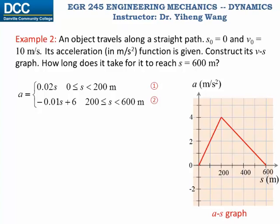Now let's look at an example that is not so straightforward. We are given acceleration as a piecewise function of position — not a function of time. We are also told that the initial position is zero and the initial velocity is 10 meters per second. We need to construct the v-s graph, velocity as a function of position, and also find at what time the position reaches 600 meters. For this we need to use the equation a·ds equals v·dv, since we have the a-s relation and need to find velocity.